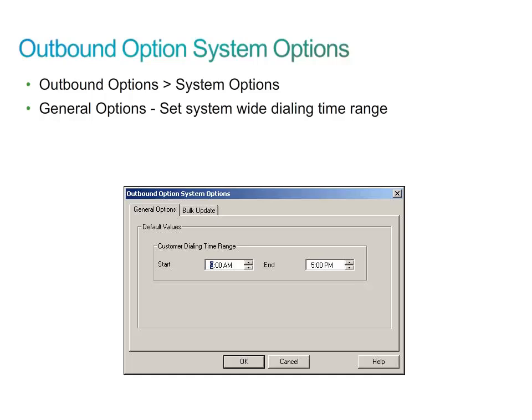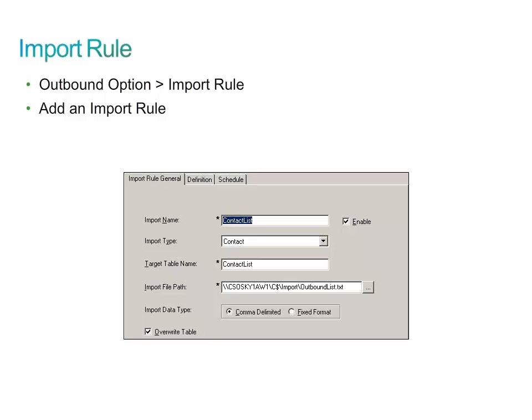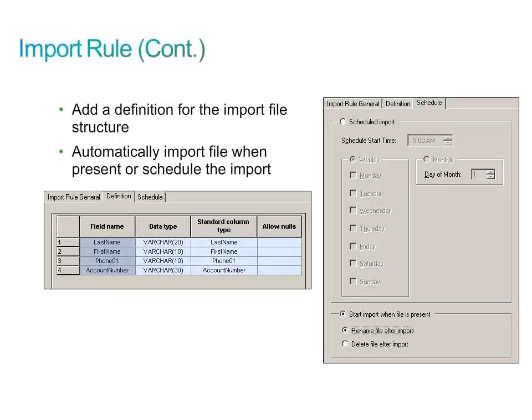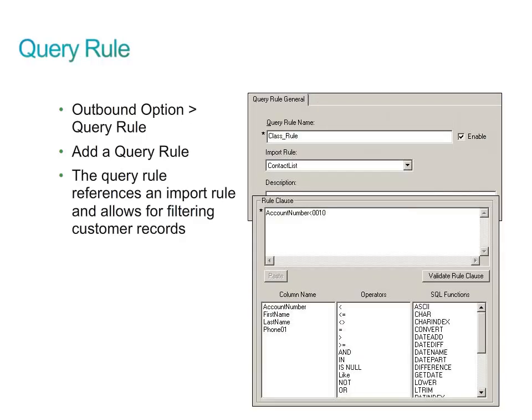For campaign configuration, in Outbound Options System Options, use the General Options tab to specify the system-wide dialing timeframe — no outbound campaign will dial numbers outside those times. Note this time range is for the customer time, not the Package CCE system time. Configure an import rule to import contacts: on the Import Rule General tab specify a name, table name, contact file location, and file attributes; on the Definition tab define the fields of the contact list file; on the Schedule tab indicate when the file should be uploaded. Configure a query rule for your contact list, used to filter or segment records from the contact list if desired.